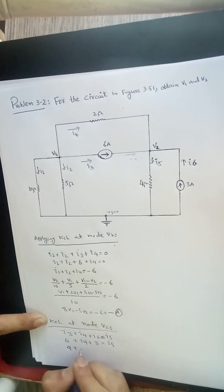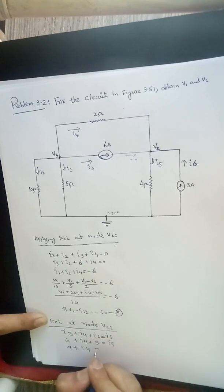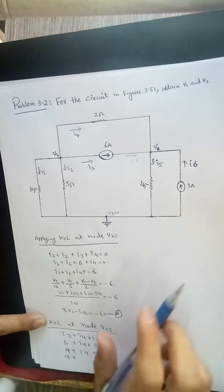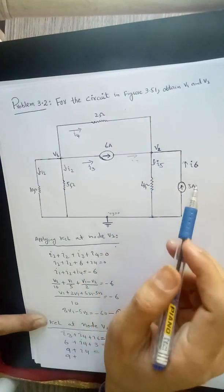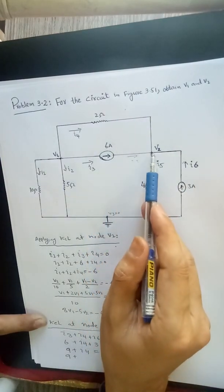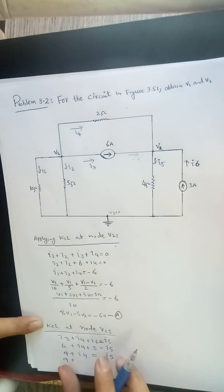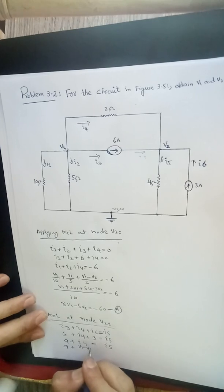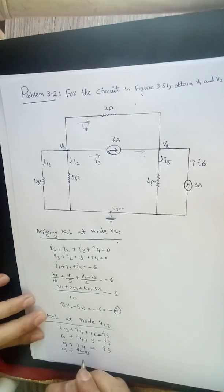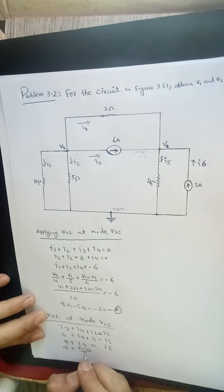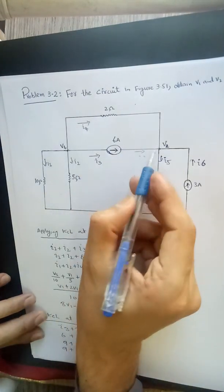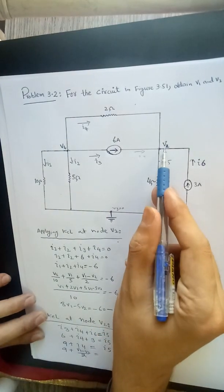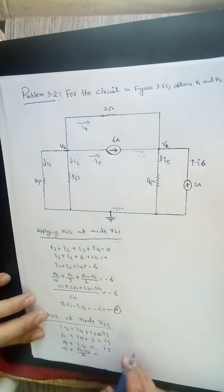Or we can say 9 plus I4. How can we determine I4? I4 is V1 minus V2 divided by 2. V1 minus V2 divided by 2.